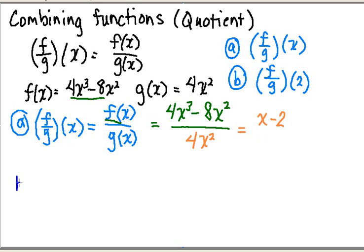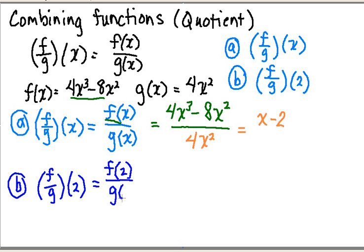Now, let's look at part b. Part b tells me that I want to know f divided by g of 2. So if I go back to the definition in place of the x, I'm going to just write f of 2 divided by g of 2.